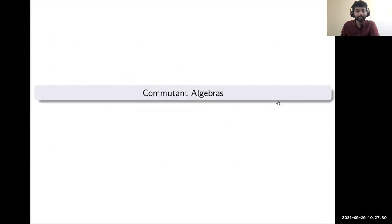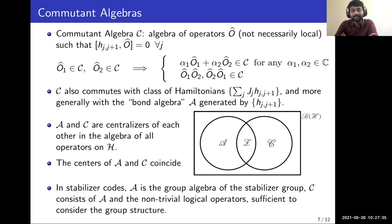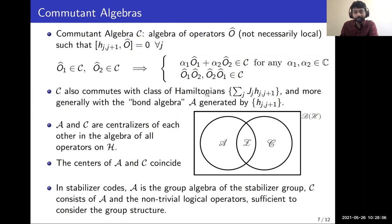To address these questions, we use the language of commutant algebras. The commutant algebra is the algebra of all operators — not necessarily local — that commute with each term of the Hamiltonian. This is a stronger condition than just being a symmetry of the Hamiltonian. It is an algebra in the mathematical sense: any linear combination or product of operators in the commutant is also in the commutant. Because each term commutes with operators in the commutant, those operators also commute with the entire class of Hamiltonians with arbitrary coefficients.